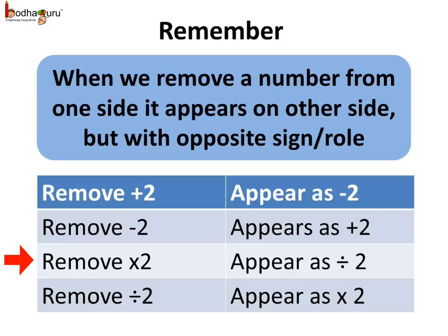For example, when we remove multiplied by 2, it appears as divided by 2 on the other side.